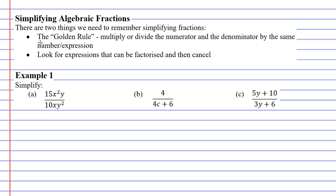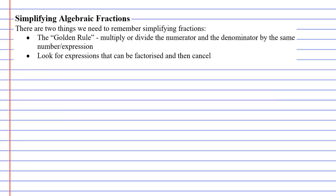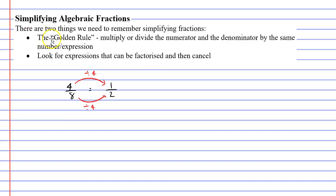I'm going to explain what I mean by doing a really simple example — simplifying four over eight. You know the answer: four over eight simplifies to one over two. Both fractions represent one half. What I'm actually doing is dividing the top and the bottom by the same thing — I'm dividing them by four. That's what you're doing when you simplify fractions, and this is where the golden rule comes from.